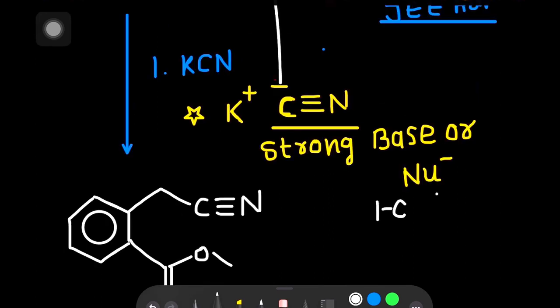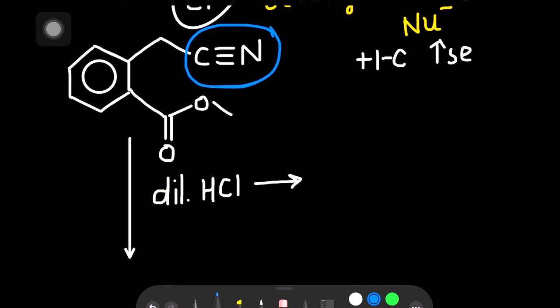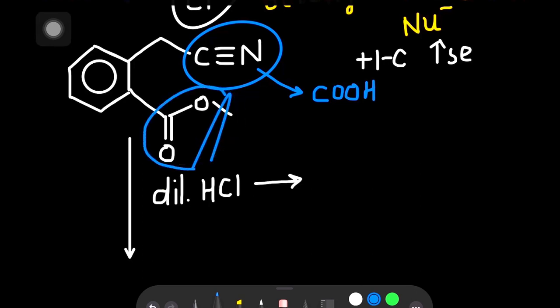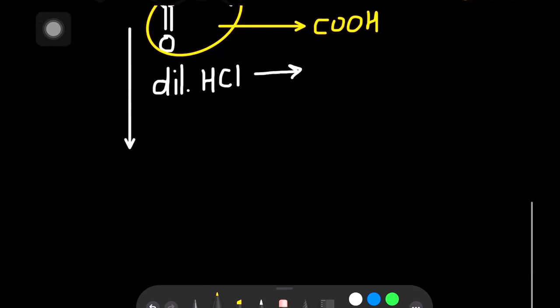In second step, when this compound is treated with diluted HCl, it will convert the nitrile group into carboxylic acid, and this ester group is also converted into acid. How does this happen?